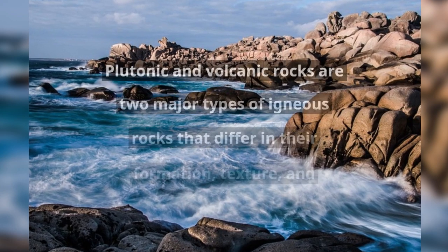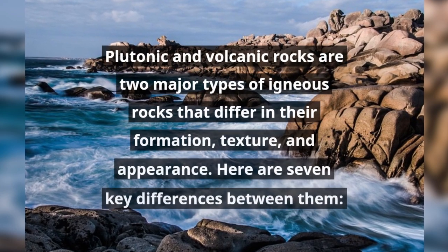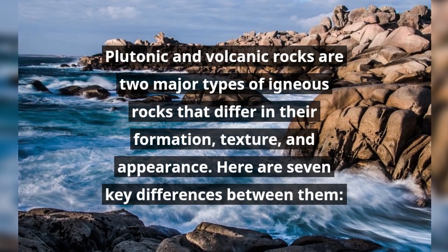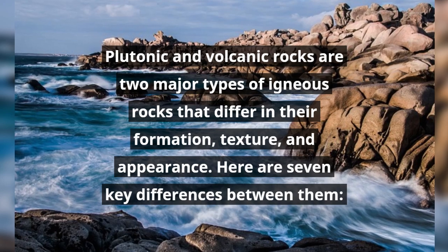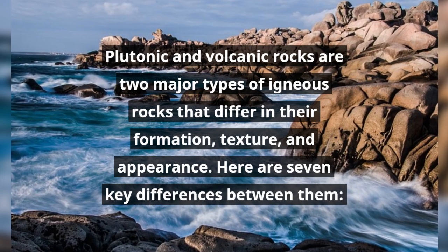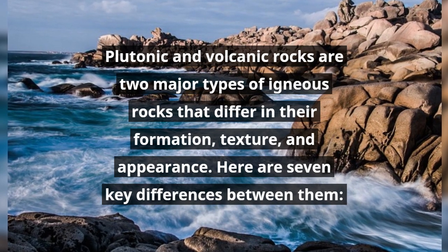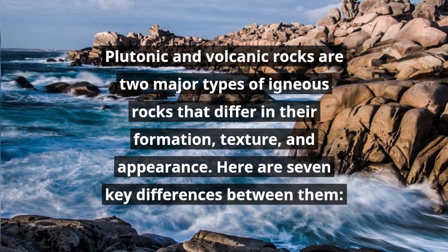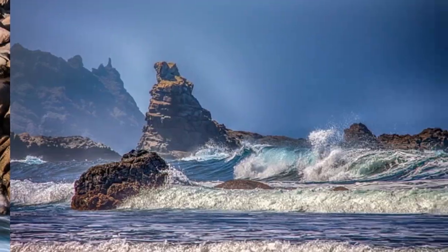Plutonic and volcanic rocks are two major types of igneous rocks that differ in their formation, texture, and appearance. Here are seven key differences between them.